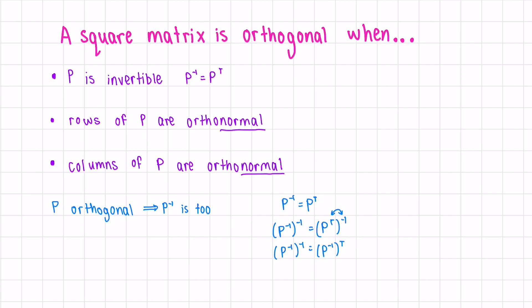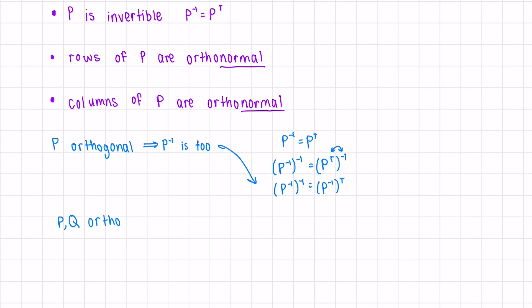This shows that P inverse is orthogonal. If P and Q are orthogonal matrices, then the product PQ is orthogonal as well. Since we know P and Q are individually orthogonal, we know Q inverse equals Q transpose, and P inverse equals P transpose.